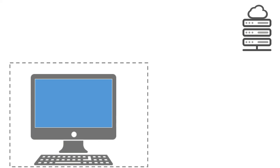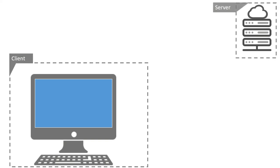To understand how these languages are related to each other, we must first understand how websites work. As you can see, we have our client side as well as the server side. The client means us — the users who are using the internet or accessing websites. The server is where the websites are saved. The mobile phone or computer you use to access the internet is what we call the client, and the files you're looking at are saved on the server.